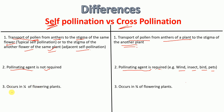The next difference is that self-pollination occurs in one-fourth of flowering plants, whereas cross-pollination occurs in three-fourths of flowering plants. Therefore, cross-pollination is more common in flowering plants compared to self-pollination.